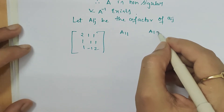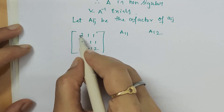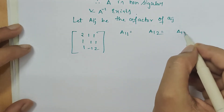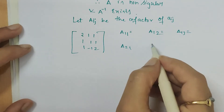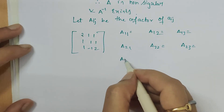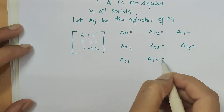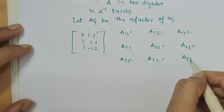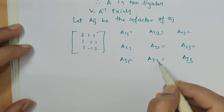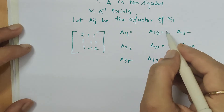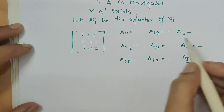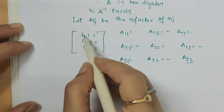Now I am writing all the cofactors: A11, A12, A13, A21, A22, A23, A31, A32, A33. For the odd-position elements — where the sum of row and column indices is odd, such as 1+2=3, 2+1=3, 3+2=5, 2+3=5 — we assign a negative sign in advance.